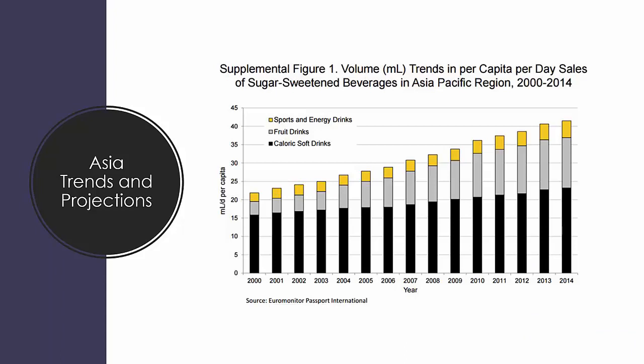Looking at Asia trends and projections, focusing primarily on the last 14 years — per capita per day sales of sugar-sweetened beverages covering categories like fruit drinks, soft drinks, and sports and energy drinks — we've seen very healthy growth in the Asia Pacific region over the last 10 years or so. And it looks likely that will continue as those economies continue moving in a strong positive direction in terms of GDP growth.